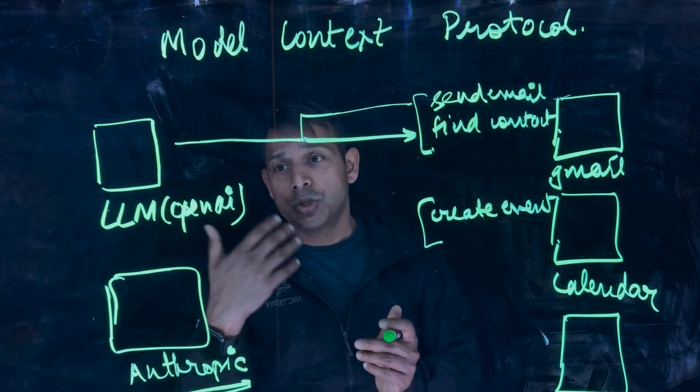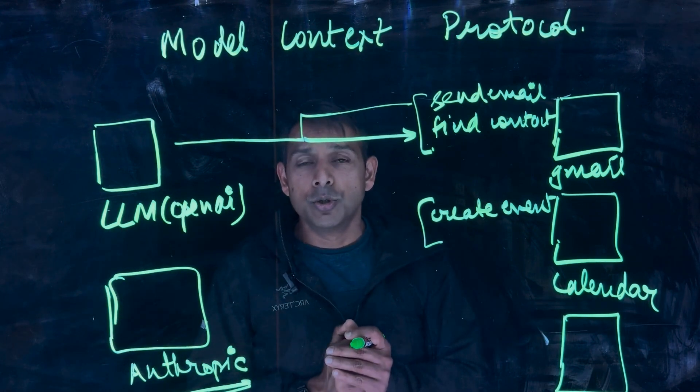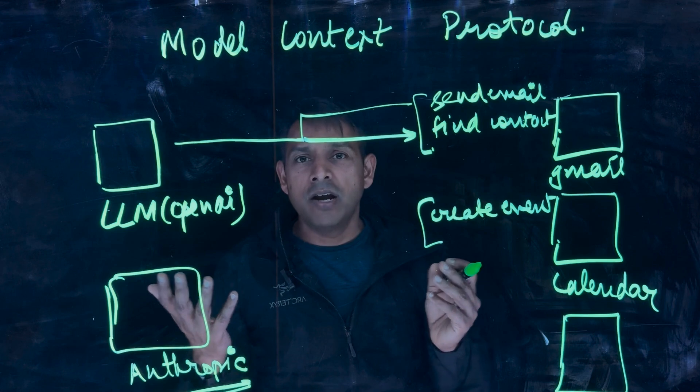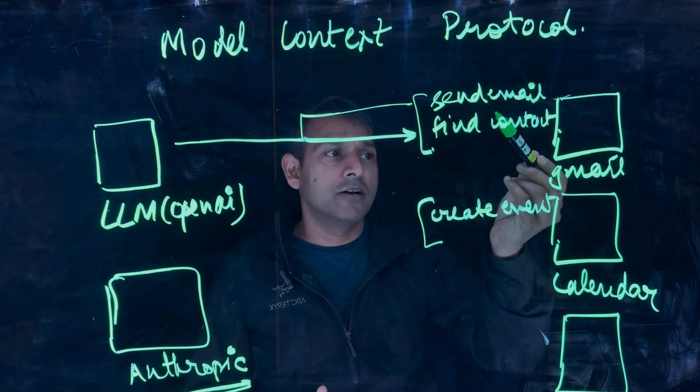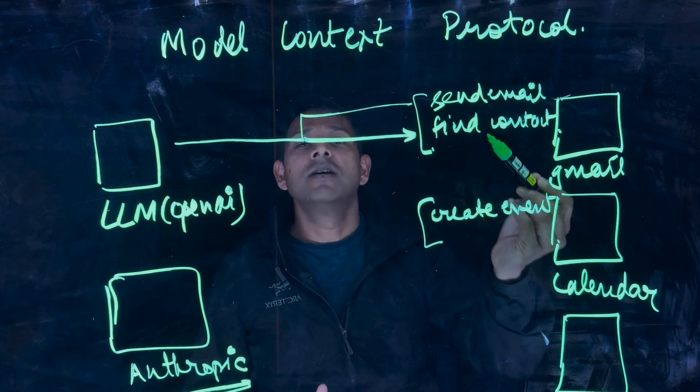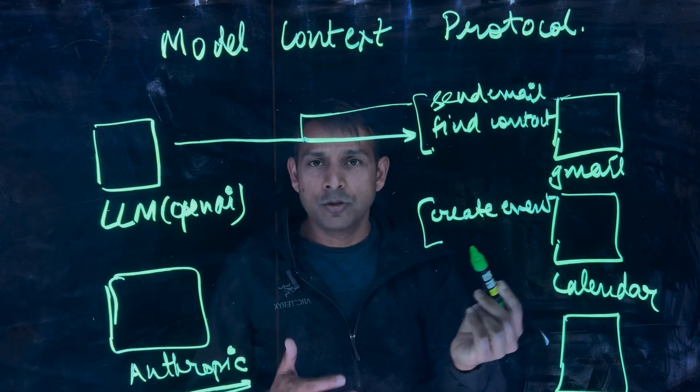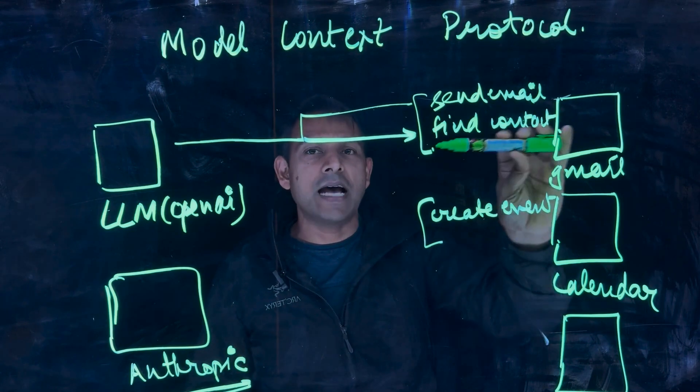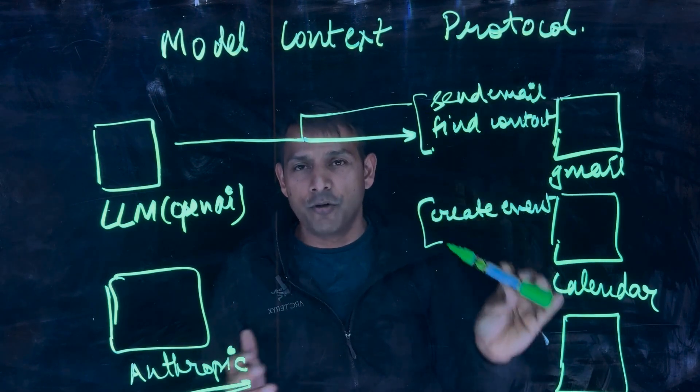So for example, when you tell an AI agent which uses LLM in the back to say, create an event with Rishi, it should be able to understand to find an email address, I go to Gmail API, search for Rishi, find the email address, and then go create an event with Rishi. So it could use multiple tools as far as it understands the tools available and the functions available for each of those.